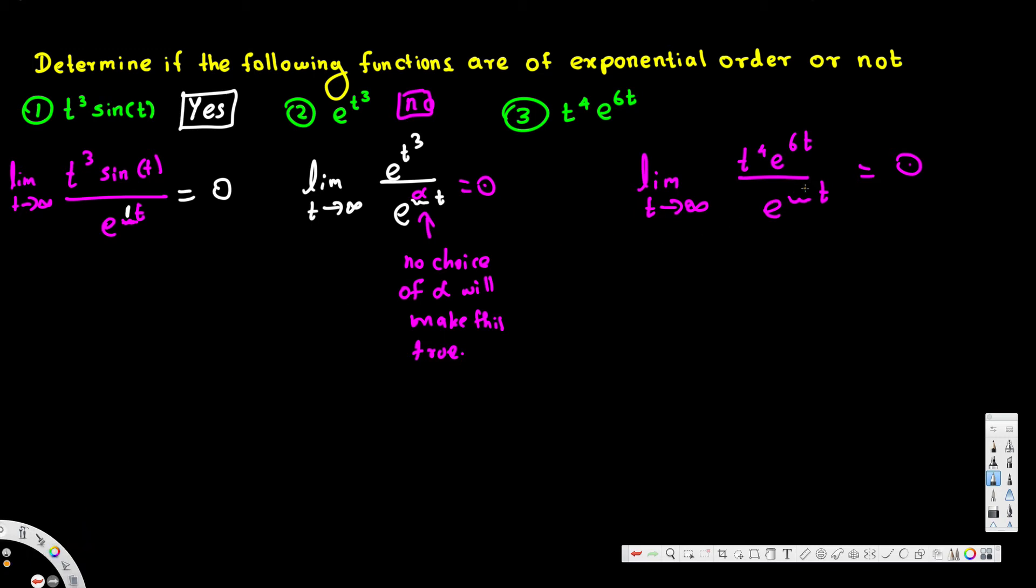put 7 right here, that means we're going to end up with t to the fourth over e to the t,